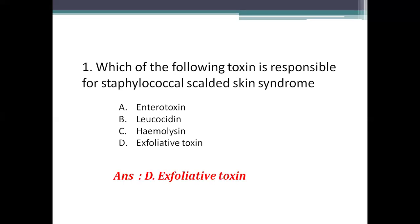The right answer is Option D, exfoliative toxin. Exfoliative toxin is of two types: exfoliative toxin A and exfoliative toxin B. Toxin A is heat stable and toxin B is heat labile. This exfoliative toxin causes epidermal splitting, which results in the blistering disease called SSSS — staphylococcal scalded skin syndrome.